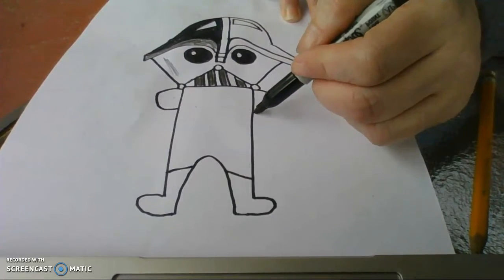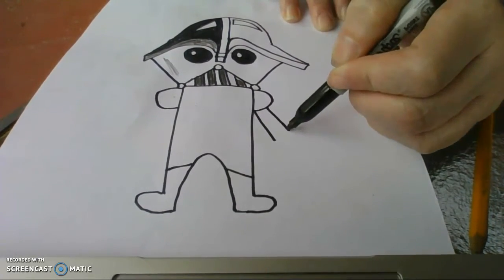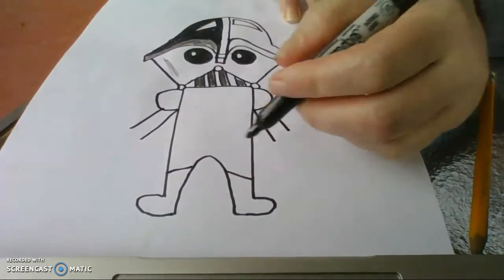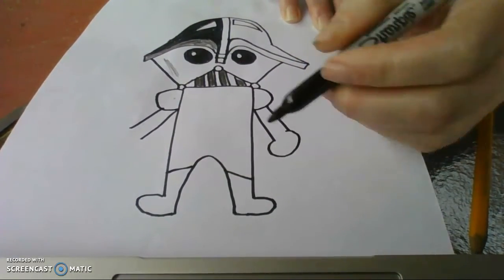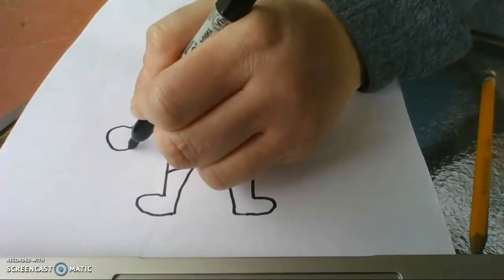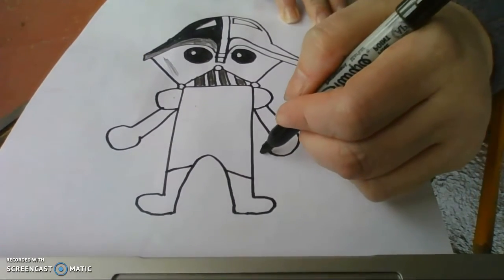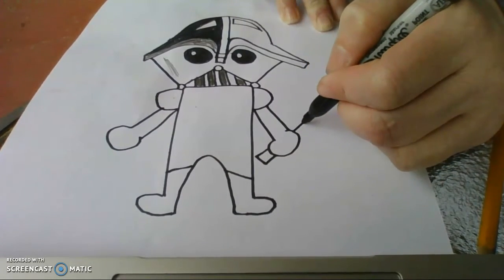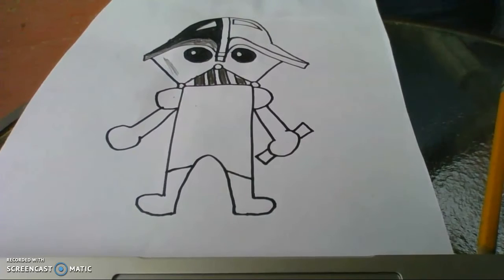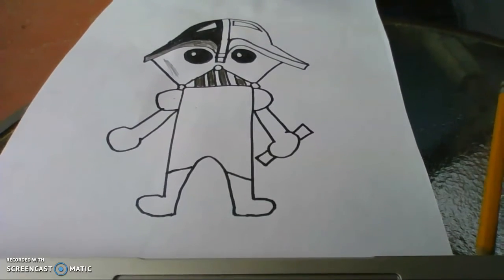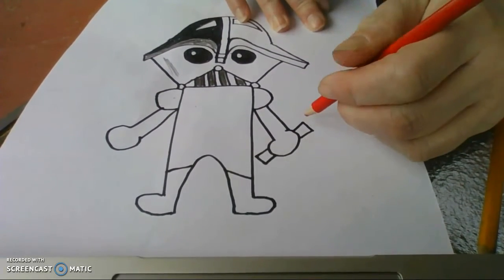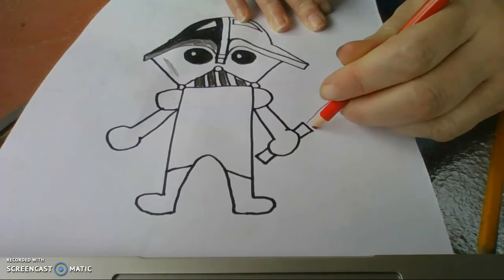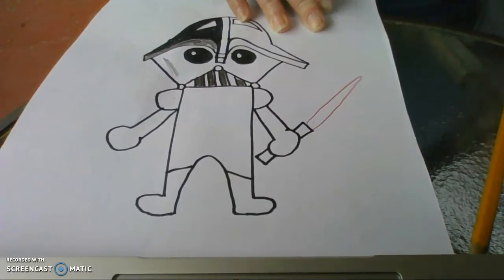And right out here, I'm going to make a rectangle. Then I'm going to go around. That's his hand. And on this side, I'm going to do the bottom part of his lightsaber and then the top part of his lightsaber. Then I'm going to take a pencil and I'm going to draw this and I'll color it in in a minute.